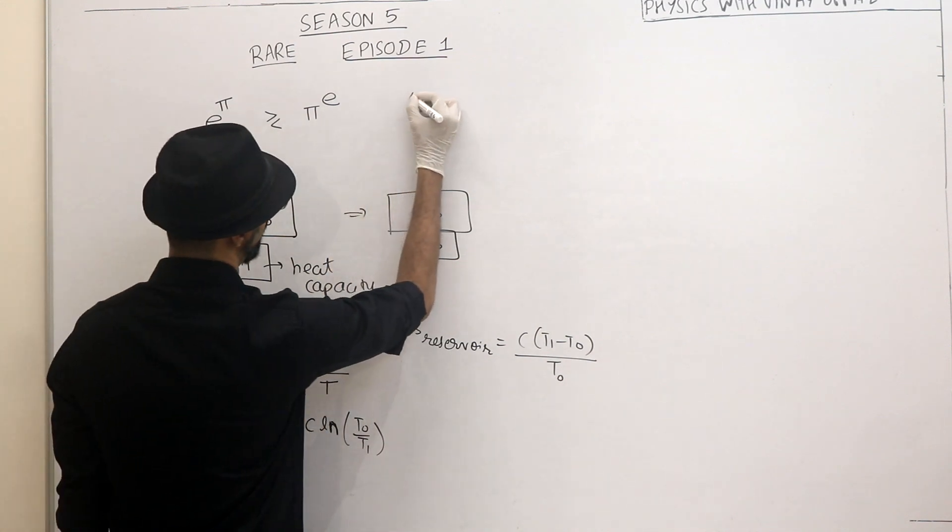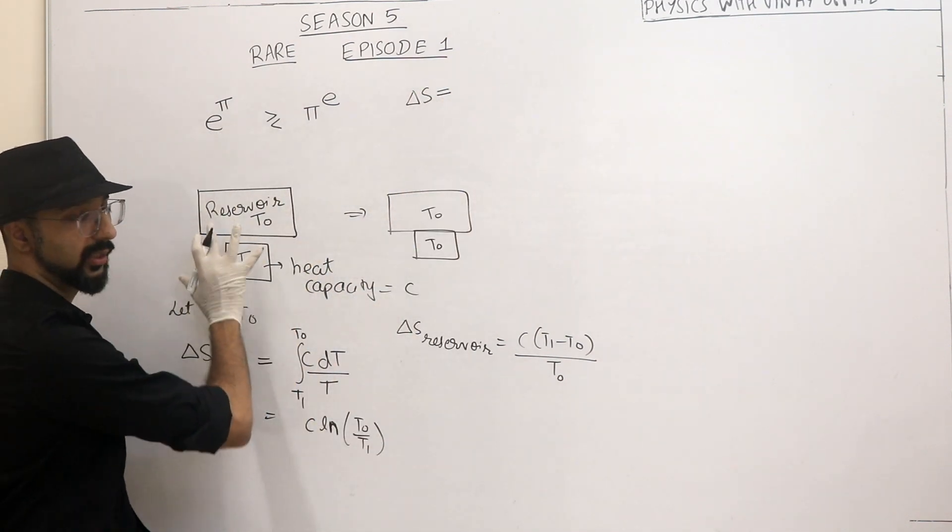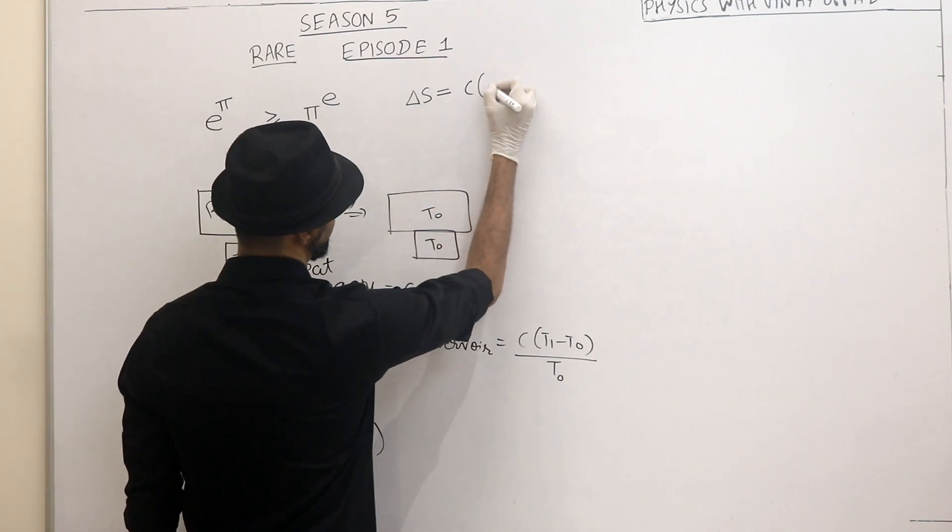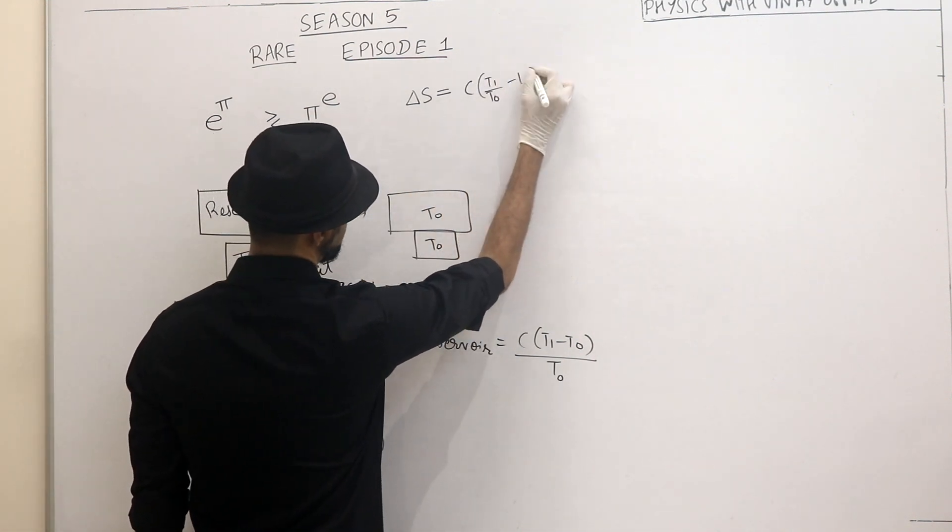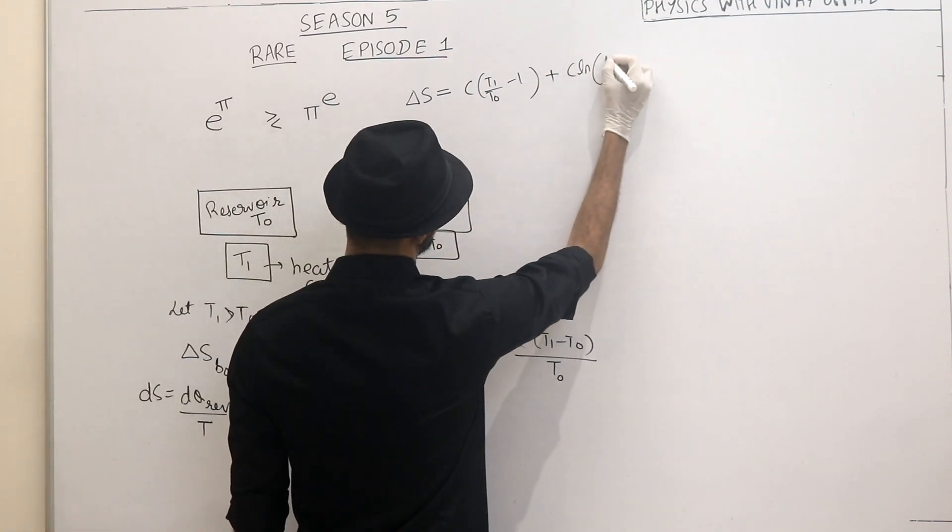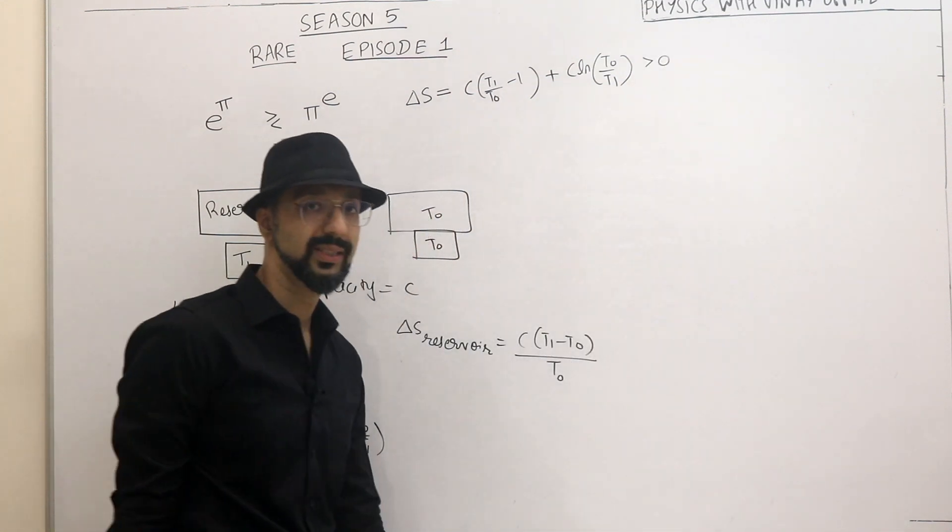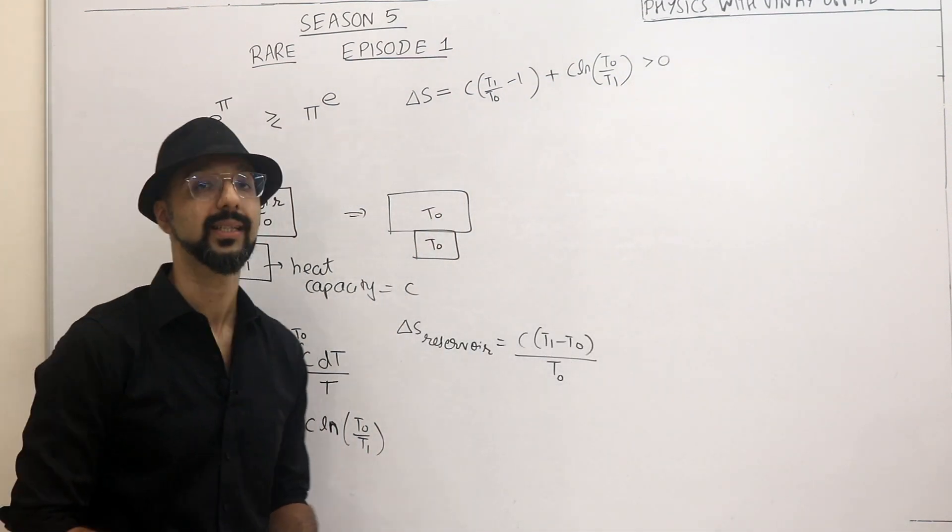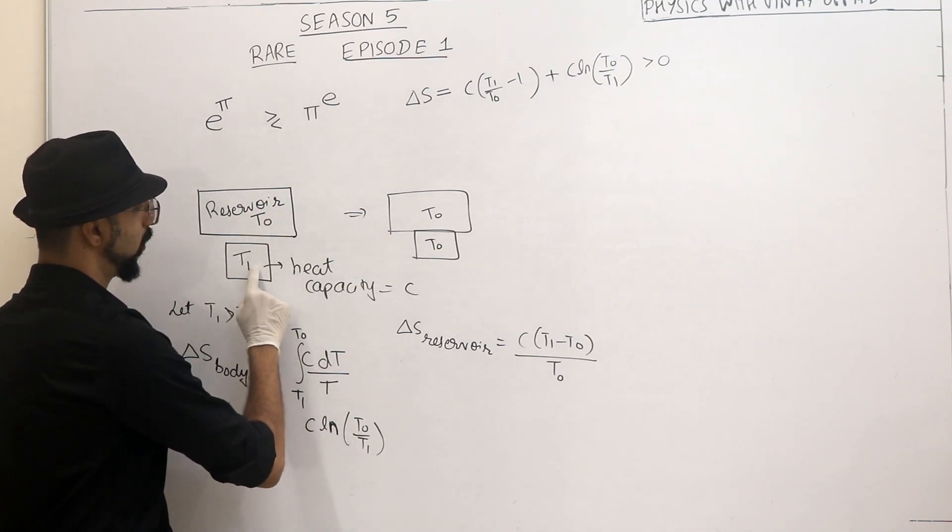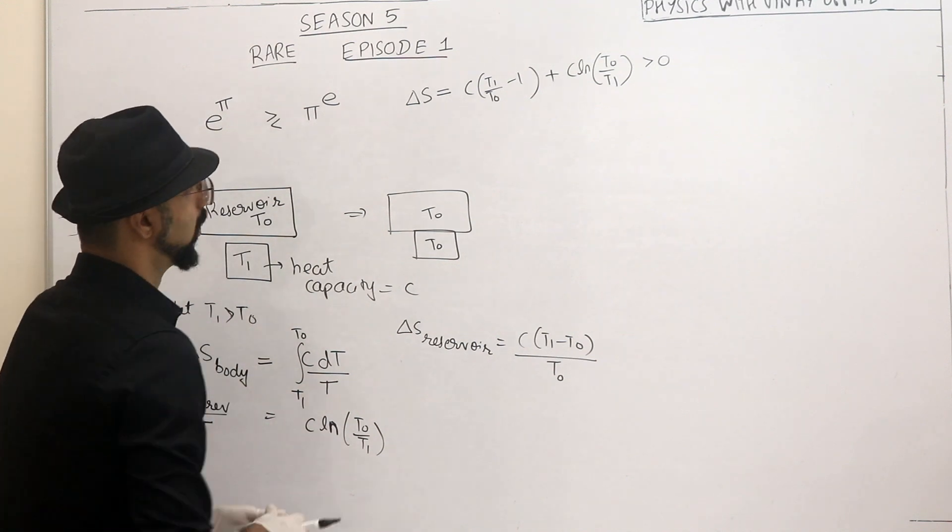So what is the total entropy? This is an isolated system. So the whole system's entropy is this plus this. This is C into T1 by T0 minus 1 plus C ln of T0 by T1. But this entropy should be greater than 0 because this is an irreversible process. Why is this an irreversible process? Because the temperature is different. So heat will flow irreversibly from the hotter body to the colder body. Correct?